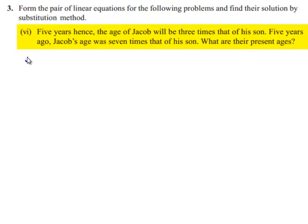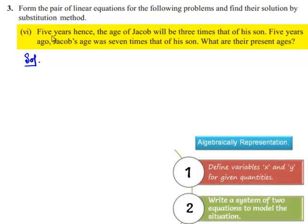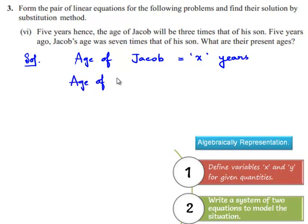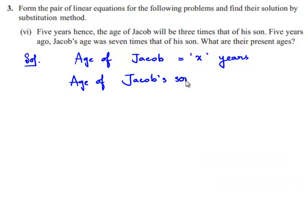The solution of this problem: given that 5 years hence the age of Jacob will be 3 times that of his son. Let us assume the age of Jacob is equal to x years and the age of Jacob's son is equal to y years.